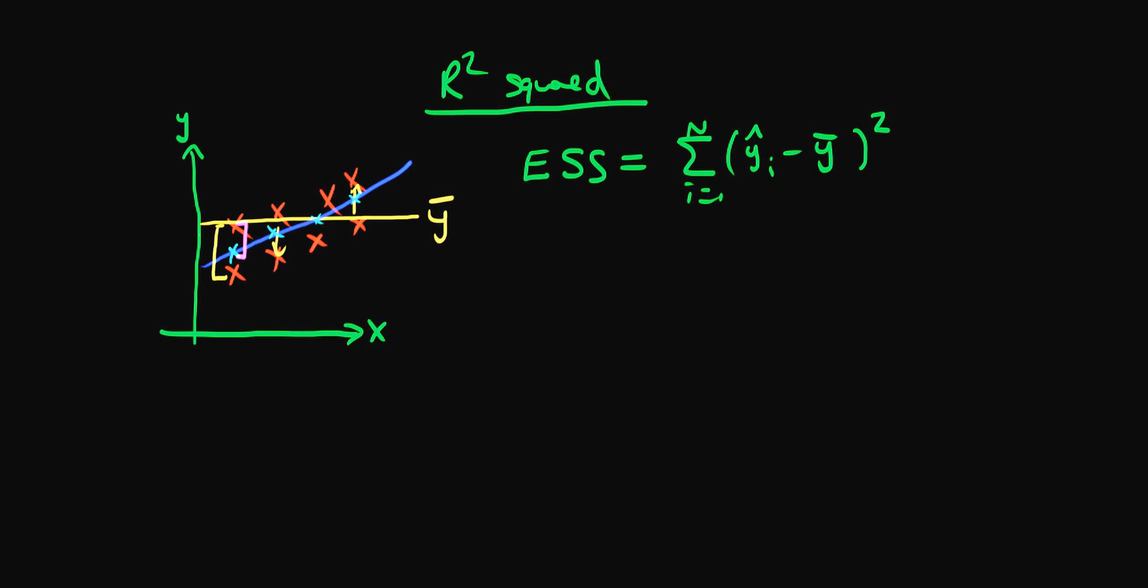You might ask why don't we just use this measure to describe how well our model is fitting the data. The problem with this measure is that it actually depends on units. If Y is measured in meters, we might get a value of 0.1 meters squared, or if it was measured in temperature, we might get something like 10 Kelvin squared. It's very hard to determine whether 0.1 meters squared or 10 Kelvin squared is actually good or not, because the explained sum of squares actually has a unit.